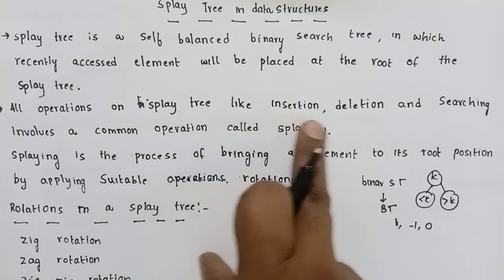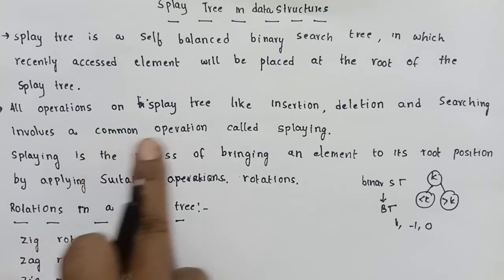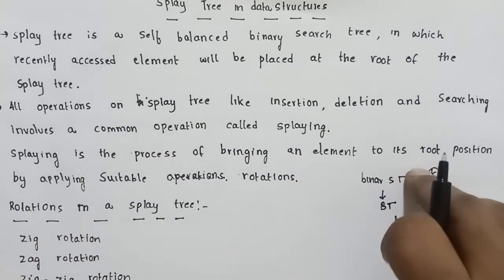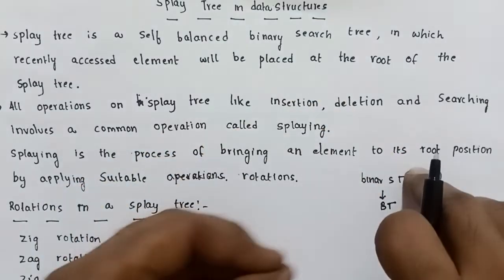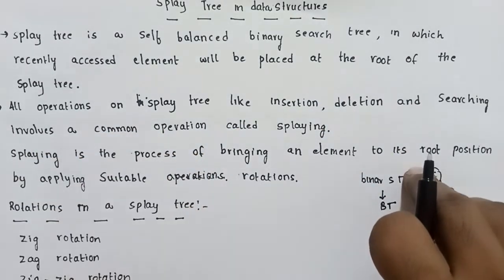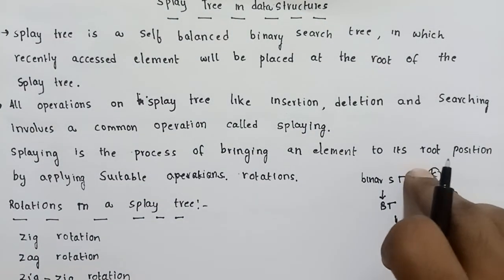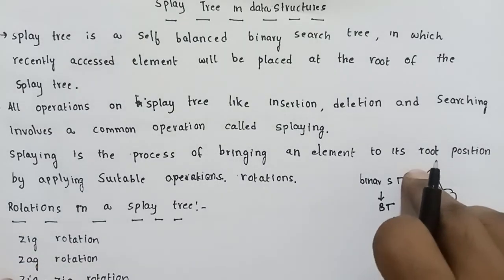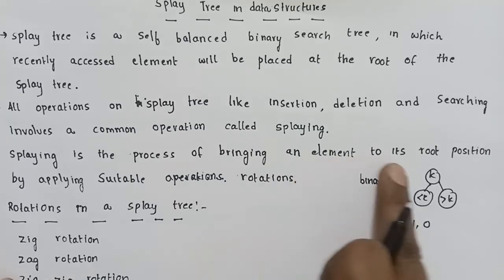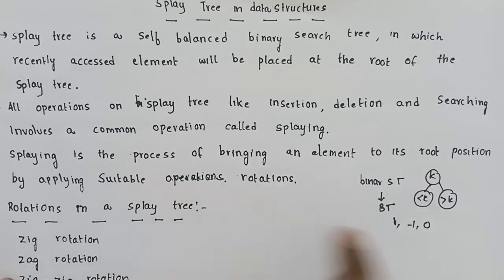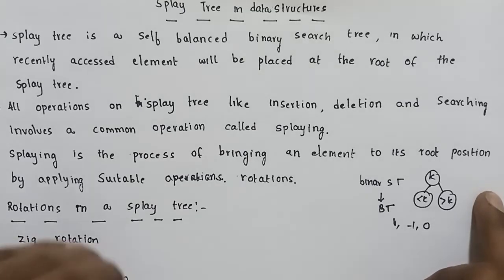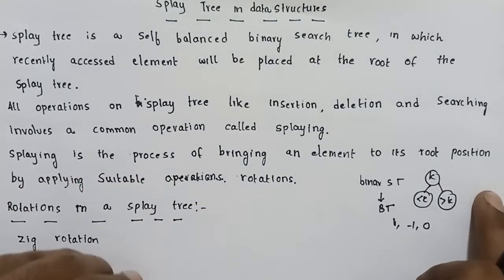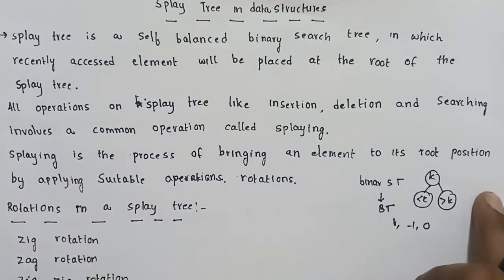All operations on a Splay Tree — like insertion, deletion, and searching — involve a common operation called splaying. Splaying is the process of bringing an element to the root position by applying suitable rotations, until the element is placed at the root node.